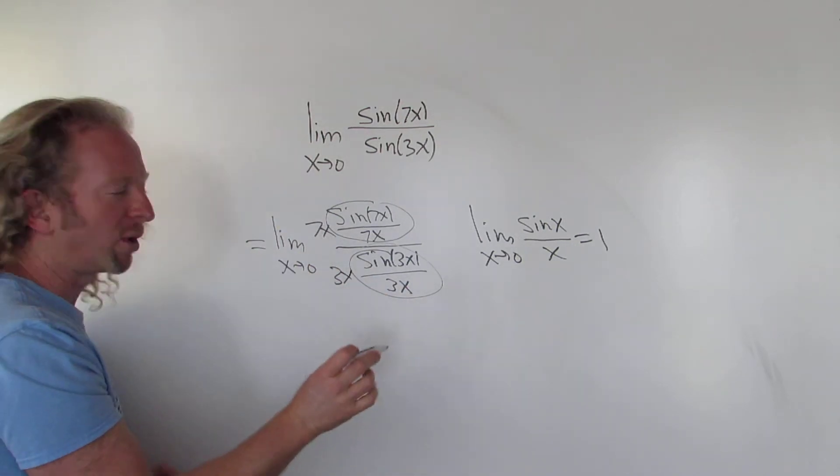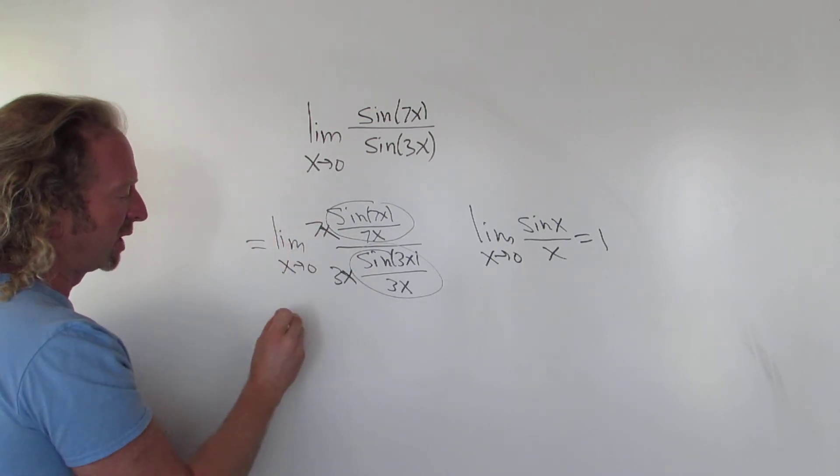And that's it, right? You can do a little bit more work if you want. These will cancel. You can pull out the 7 thirds.